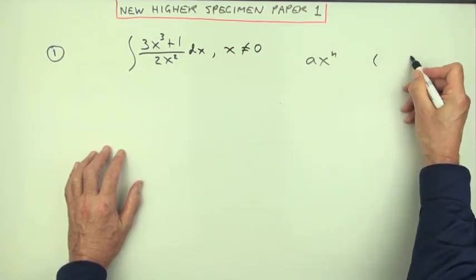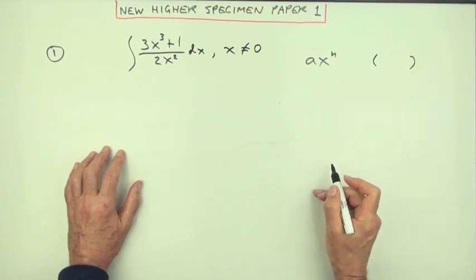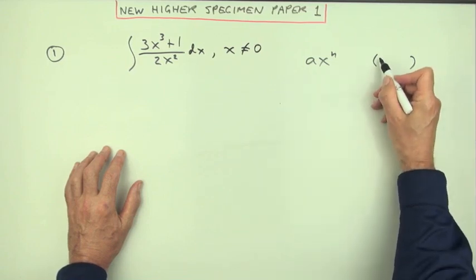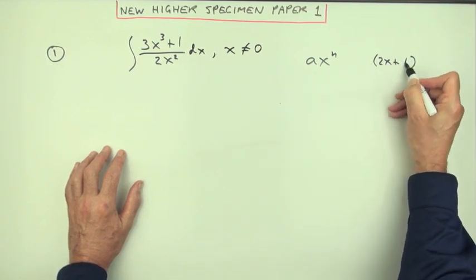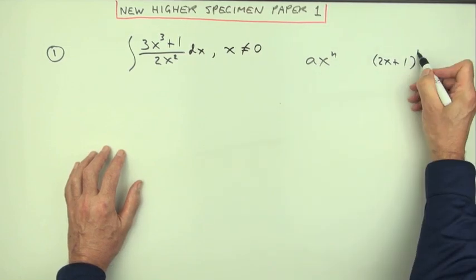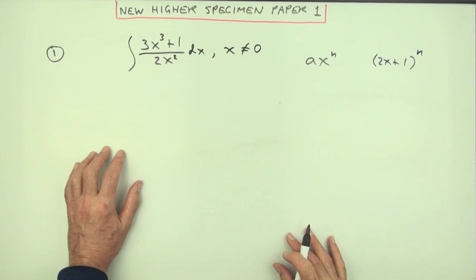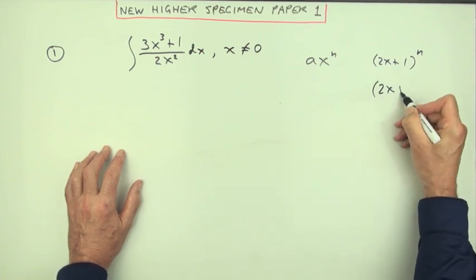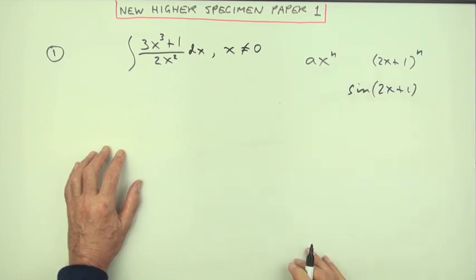You'll only get two varieties of the chain rule, of a function of a function. Either you'll have some inner function like 2x plus 1 and you'll find a power of it, or you'll have some inner function and you'll find either a sine or cosine of it.